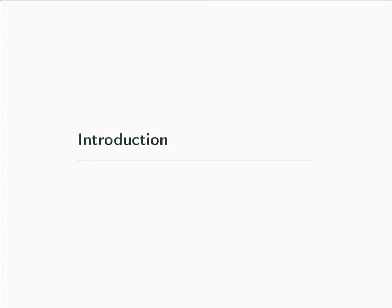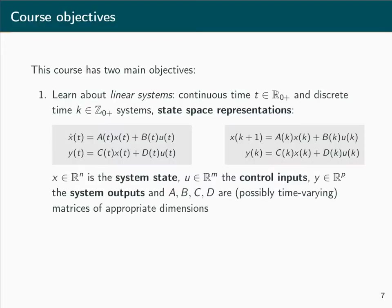Let's begin the technical part of this course with a short introduction into some basic concepts. This course follows two main objectives. The first and most obvious is for you to learn something about linear systems, where a linear system refers to a dynamic system that can be written in a so-called state-space representation. State-space representations exist for continuous-time and discrete-time systems.